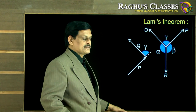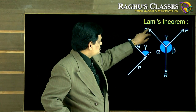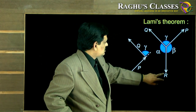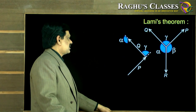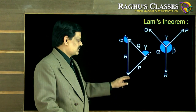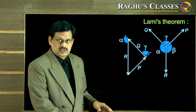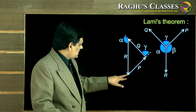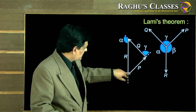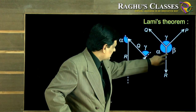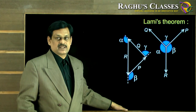I draw Q from there, and from the end of Q I need to draw R, turning by angle alpha. This closes the triangle perfectly as per the law of triangle of forces. The angle between P and R in this construction is exactly beta, as you can see from the diagram.